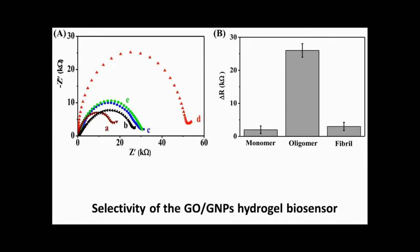We use electrochemical impedance spectroscopy to analyze A-beta oligomers. This hydrogel biosensor can selectively differentiate A-beta oligomers from A-beta monomers or fibrils.